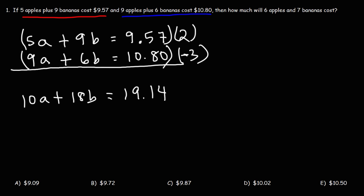Now let's multiply the second equation by negative 3. 9A times negative 3 is negative 27A. 6B times negative 3, that's going to be negative 18B. And then 10.8 times negative 3 is negative 32.40.